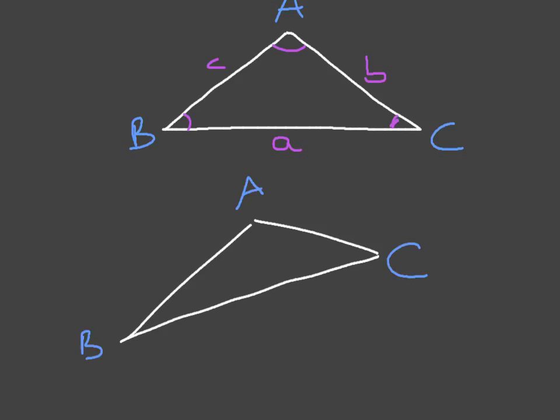Following that, we label each of the opposite side lengths with the same letter but in lowercase. So the side length opposite angle A would be lowercase a. The side length opposite angle B would be lowercase b. And the side length opposite angle C would be lowercase c.